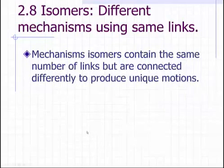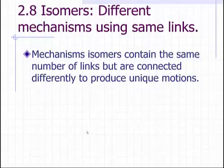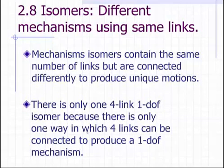In mechanisms we also have isomers, and in these cases they contain the same number of links but are connected differently to produce unique motions. Consider that there is only one four-link, one-degree-of-freedom isomer, because there is only one way in which four links can be connected to produce a one-degree-of-freedom mechanism.